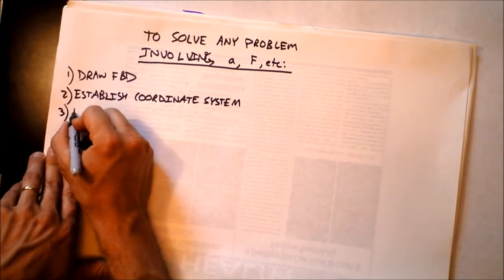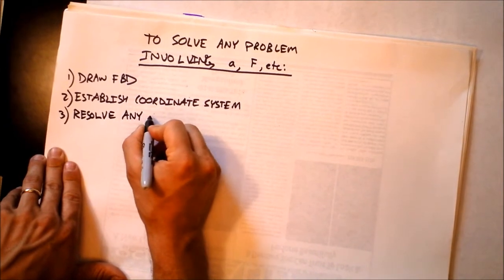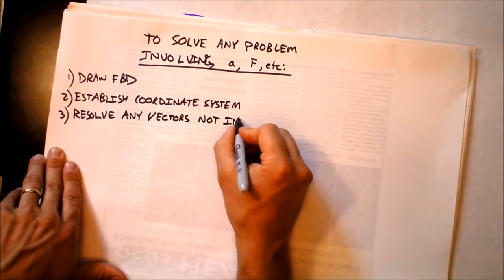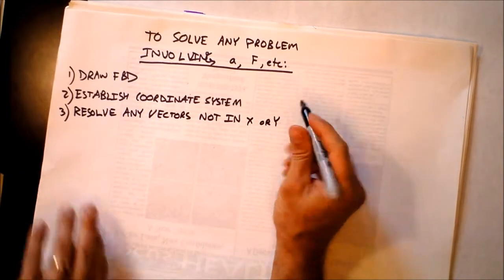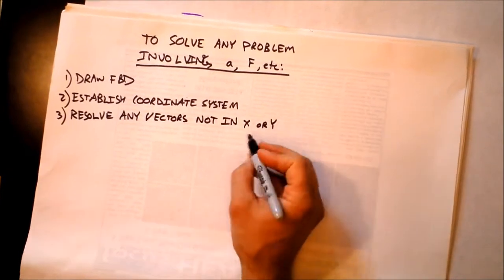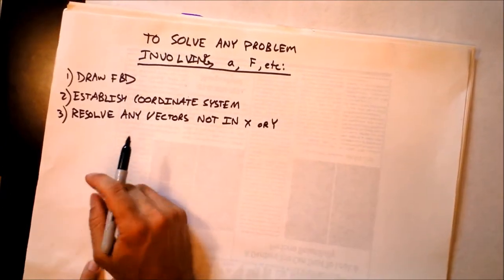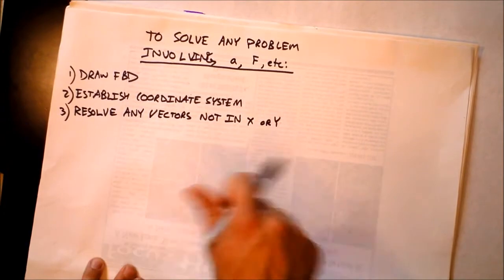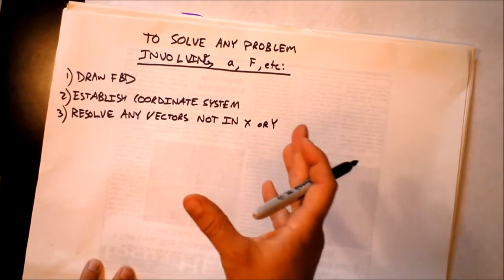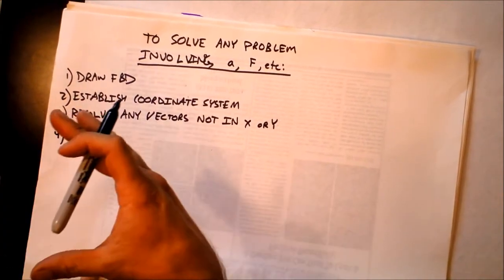Third step, resolve any vectors that are not in x or y. Once you resolve those vectors that are not in the x or y direction, you're going to use the components of the vectors that you resolved rather than the vectors themselves in the future of the problem. You're going to have only x direction motion or y direction motion. We call those directions normal to each other or orthogonal because they're not dependent on each other. They are, strictly speaking, completely apart from each other.